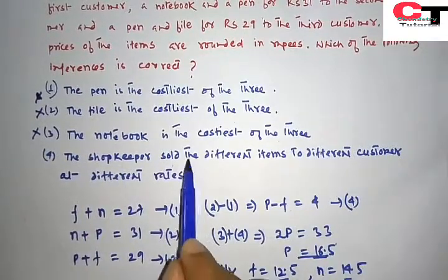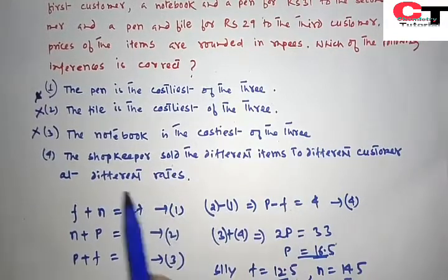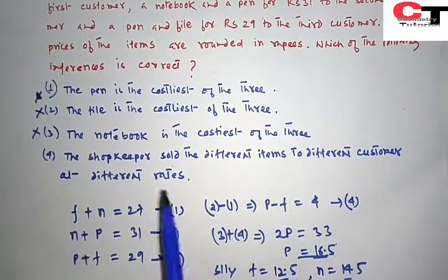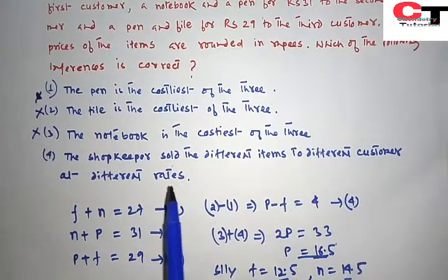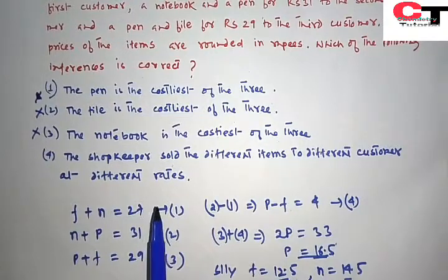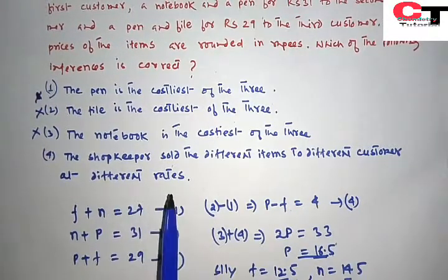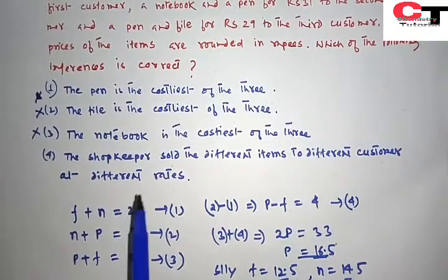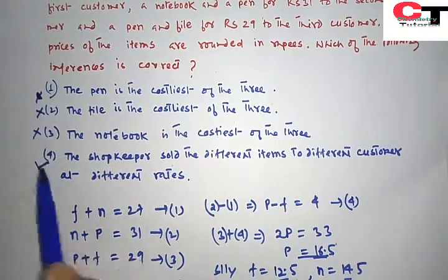The shopkeeper sold the different items to different customers at different rates. This is the only possible option. If the items are sold to different customers at different rates, then it can only be in rounded rupees. So the possible answer will be 4.